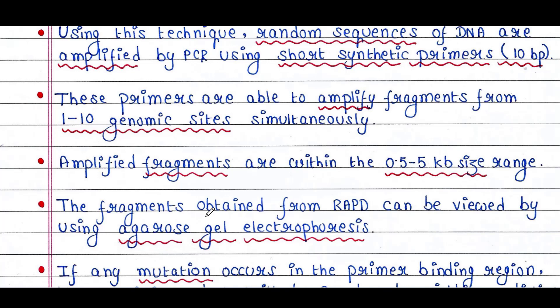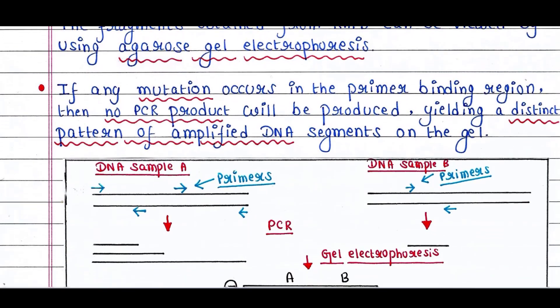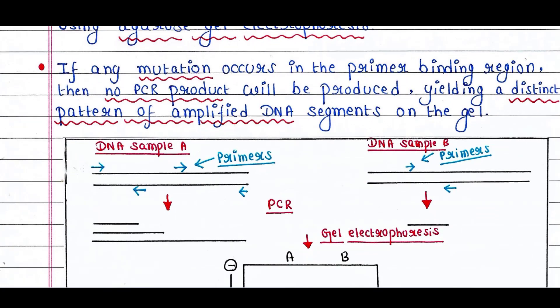The fragments obtained from RAPD can be viewed by using agarose gel electrophoresis. That is the fate of any PCR product, right? If any mutation occurs in the primer binding region, then no PCR product will be produced, yielding a distinct pattern of amplified DNA segments on the gel.